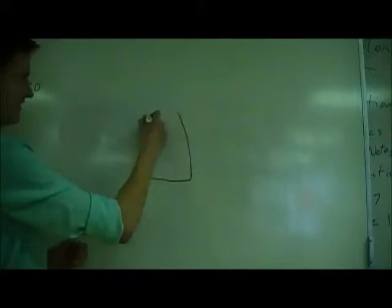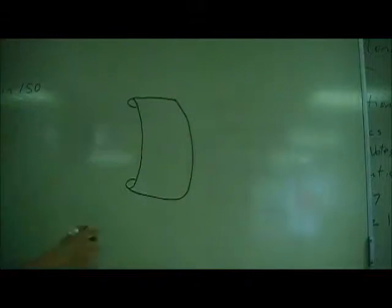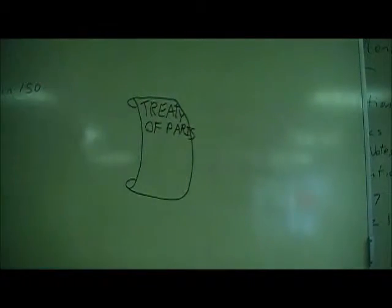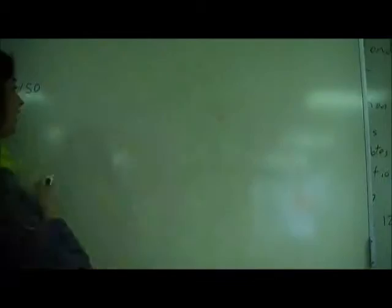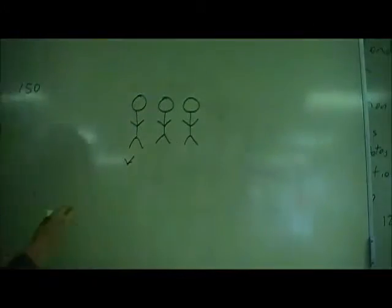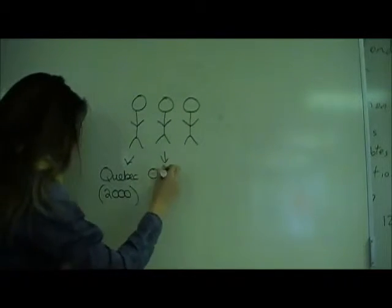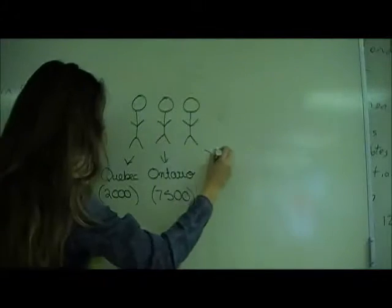When the Treaty of Paris was signed, between 80,000 and 100,000 loyalists were forced to leave the U.S. Some went to England, British colonies, and some formed in the colonies Quebec, Nova Scotia, and the island of St. John's. 75,000 went to Ontario, 2,000 went to Quebec, and 30,000 went to Cape Breton and St. John's.